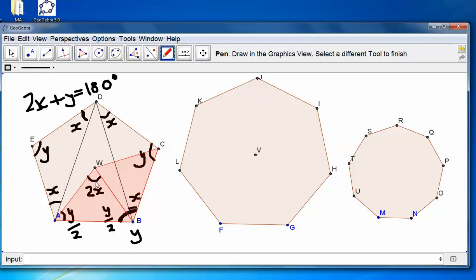Now, the reason it has to be 2X is because we've got the 2X plus Y is 180, and for any triangle, the angles have to add up to 180. So, the Y plus the 2X is 180.